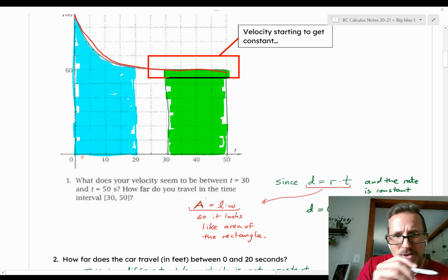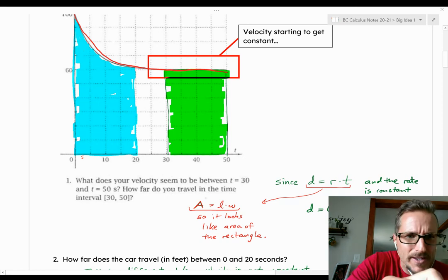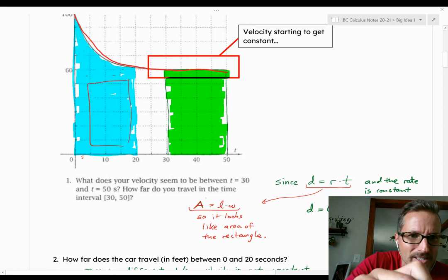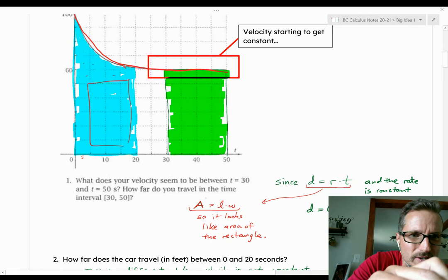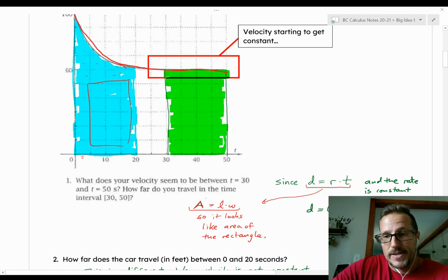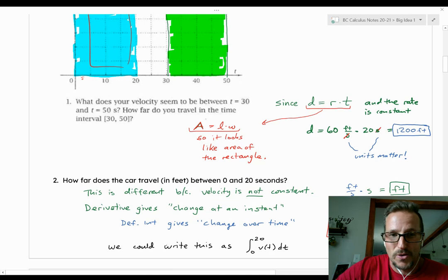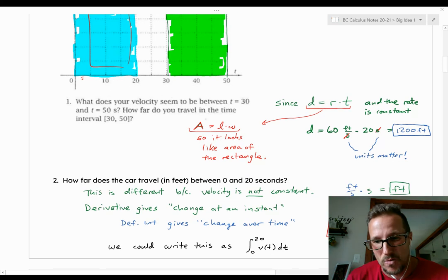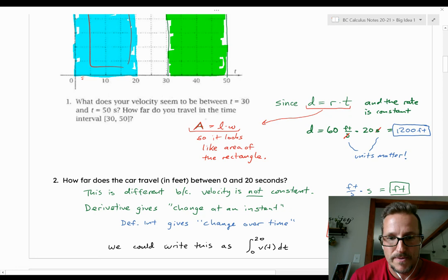But I can estimate it by counting blocks. I kind of counted the blocks. And I got all these down below. And then I just kind of, here's one, here's two, here's three, four and a half. So I just counted and just estimated. So I estimated that the car went 1,625 feet.